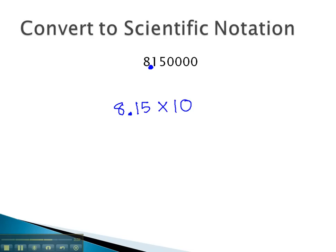Because 8,150,000 is a large number, much larger than 10, our exponent will be positive.